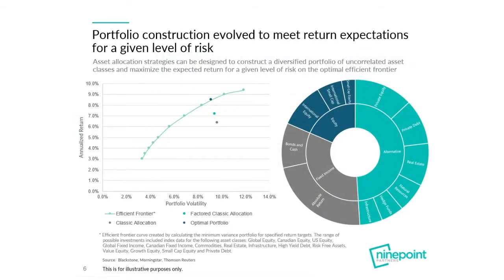This chart shows how the various models actually perform historically. The pie chart on the right shows a typical endowment model portfolio — Nine Point is offering products including infrastructure, real estate, private debt, private equity, and real asset strategies including commodities. The chart on the left shows the concept of the efficient frontier, plotting annualized return versus portfolio volatility under each of the three models. The lowest dot is the classic 60-40 allocation, the teal dot is the factored classic allocation, and the darker blue dot is the endowment model. As portfolio construction evolved, we were able to shift the curve up and to the left — at any given level of risk, you have a greater expected annualized return, or for the same return, you can lower portfolio volatility.